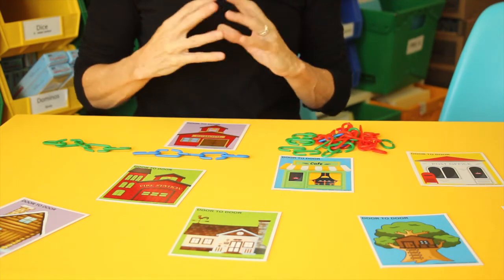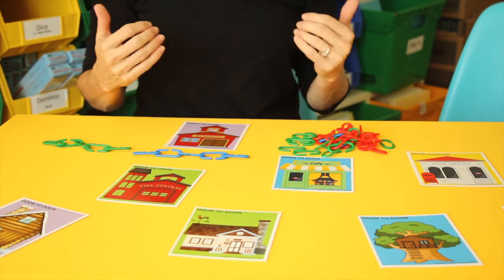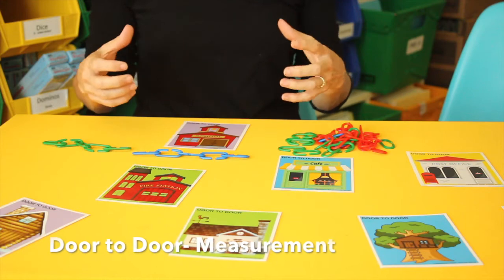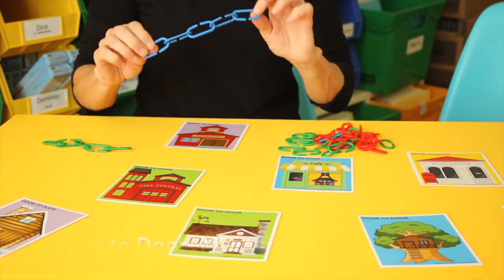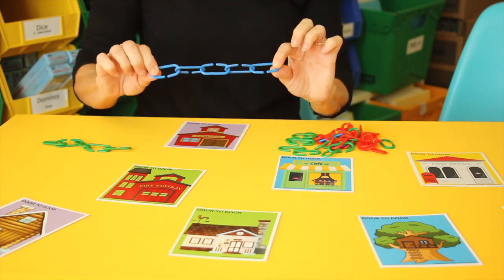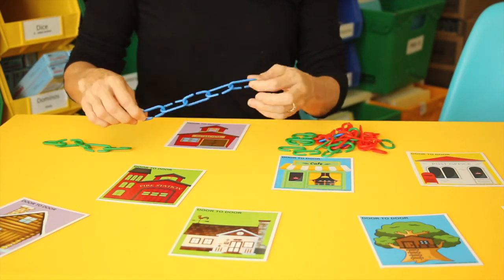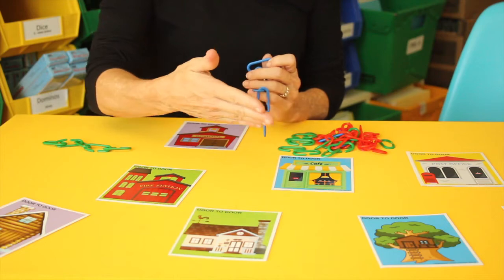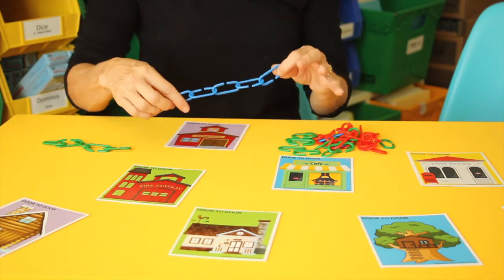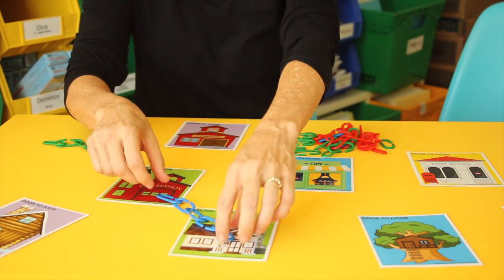The activity Door to Door is one in which students will be using linear measurement using non-standard unit of measure. They'll use the linking chains to measure the distance from one door to another door. They have all these different types of houses that they can place anywhere in the room, and then they just measure from door to door.